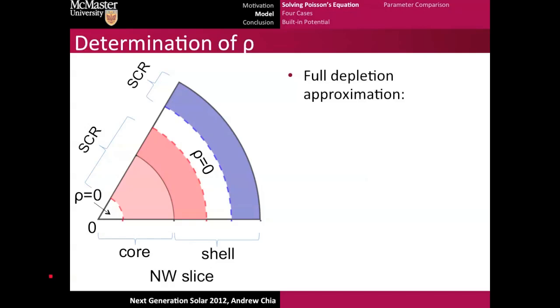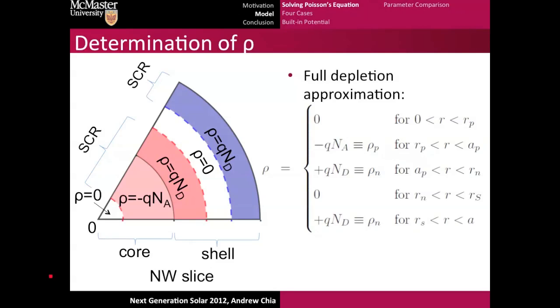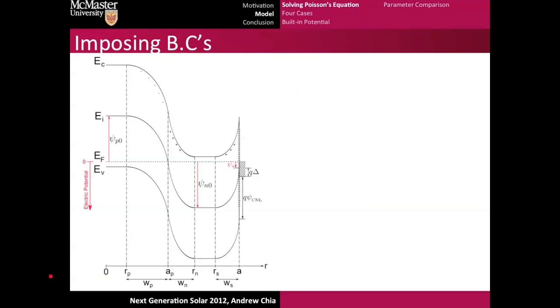If we invoke the full depletion approximation, we can easily assign what the charge densities are in each of the other space-charge regions. In this case, we have a P-doped core and an N-type shell. Then we can write this mathematically in terms of some dimensions that you can see a little bit clearer down here if we were to draw the band diagram.